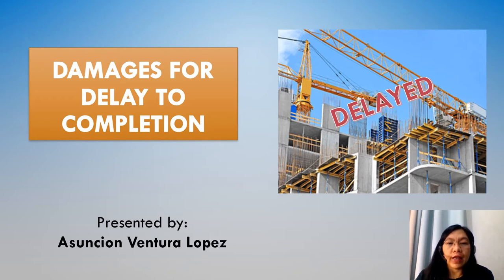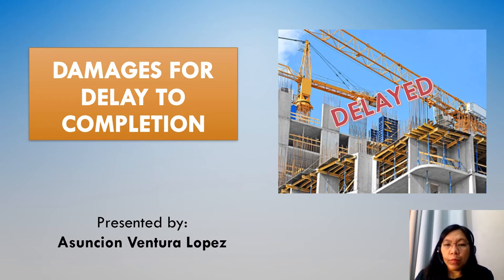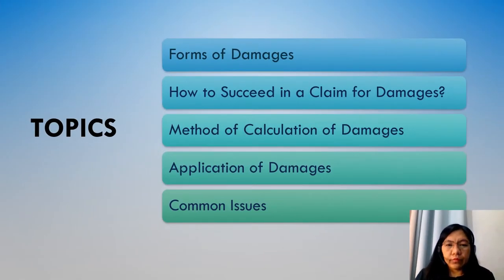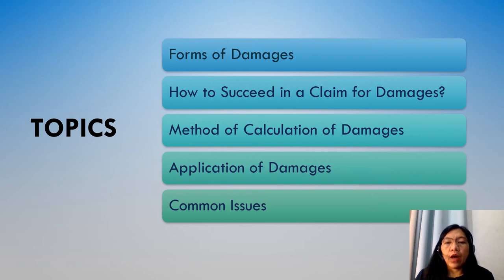In this presentation, we will discuss the damages for delays to completion. Being a planner, the main concern is always the completion of the project as scheduled. However, when there is a delay in the completion of a construction contract for events attributable to the contractor, then the contractor may need to pay for damages for breach of contract. The damages are meant to place the innocent party in the same position as if the contract had been performed without the breach.